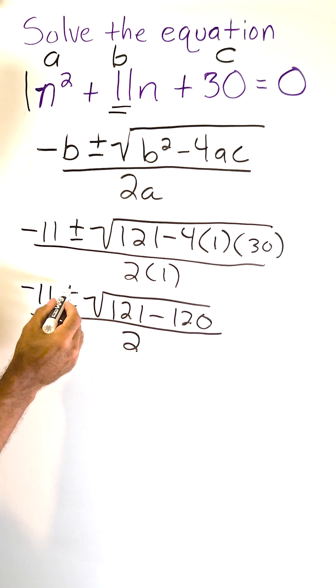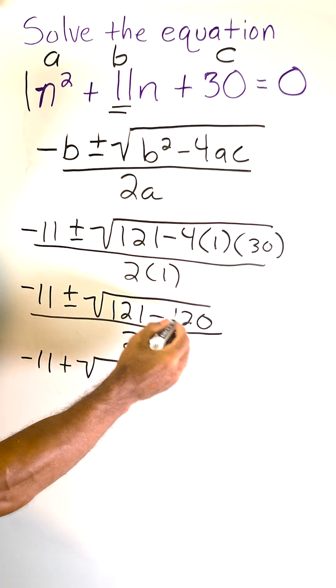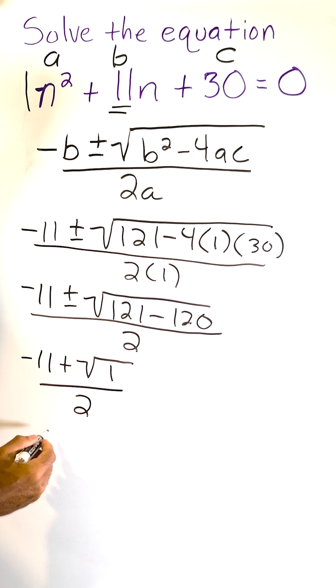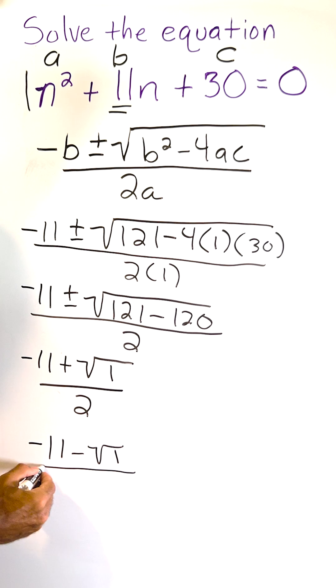Let's start with the positive path that we would have to take. Let's write negative 11 plus the square root of the difference of these two numbers, which is 1 divided by 2. Then we're also going to have to solve when we see what would happen if it were minus, which would be negative 11 minus the square root of 1 divided by 2.